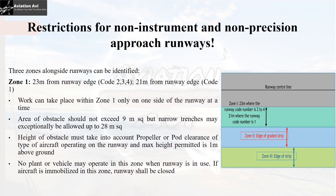Work can be permitted in zone 1 only on one side of the runway at a time, and the area of the obstacle should not exceed 9 square meters, but narrow trenches may exceptionally be allowed up to 28 square meters. The height of the obstacle in zone 1 must take into account the propeller or port clearance of the aircraft type operating on the runway, and the maximum height permitted is 1 meter above the ground. No plant or vehicle may operate in this zone when the runway is in use. If an aircraft is immobilized in this zone, the runway shall be closed.